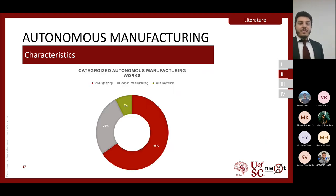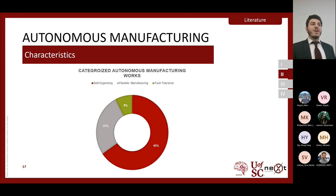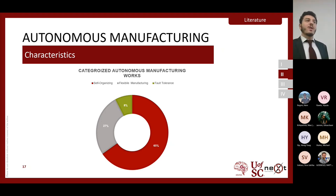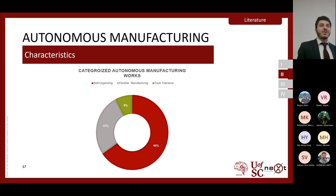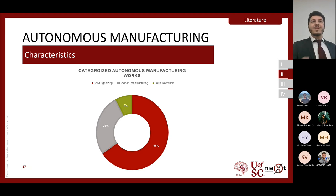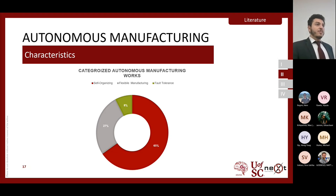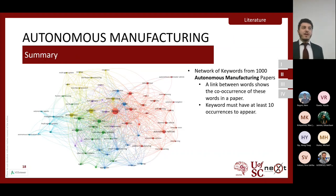During the review we gathered about 35 works towards autonomous manufacturing and categorized them. About 65% of works focused on self-organizing and dynamic scheduling; 27% focused on flexible manufacturing; however, only 8% actually looked at how to achieve a fault tolerant production line. That is why fault tolerance is a gap this thesis looks to tackle.